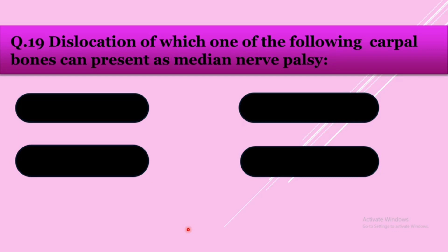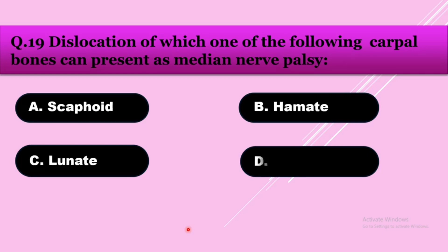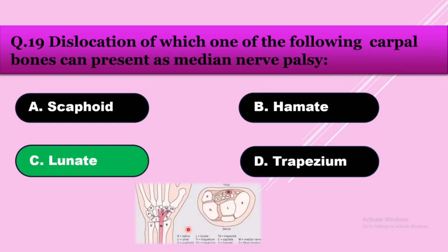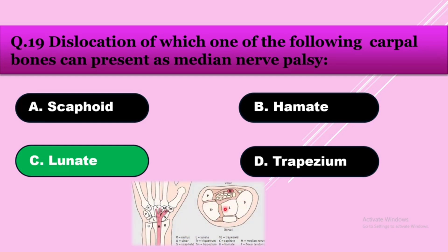Question number nineteen: Dislocation of which carpal bone can present with median nerve palsy? Option A: scaphoid, option B: hamate, option C: lunate, option D: trapezium. The answer is lunate. The lunate dislocates anteriorly, reducing the space of the flexor retinaculum and compressing the median nerve, which passes through the flexor retinaculum.